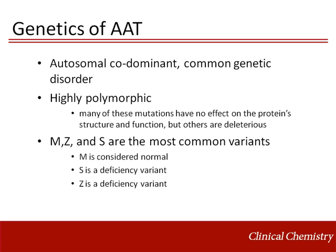AAT deficiency is inherited in an autosomal codominant fashion, meaning that two different versions of the gene may be actively expressed, and both versions contribute to the genetic trait. Prevalence of deficiency is about 1 in 2,000 to 1 in 5,000. The gene that encodes AAT, Serpina1, is highly polymorphic — there are over 100 variants documented in the literature. Many of these mutations have no effect on physiological protein concentration or function. However, some of these variations have damaging physiological consequences.